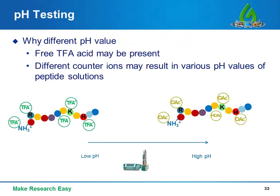Another helpful test is pH testing. For the same custom peptide, different counter ions can lead to different pH values in peptide solution. For custom peptides containing TFA, a lower pH results from free TFA acid, and since TFA is a much stronger acid than acetic acid, the pH of a TFA salt peptide is lower than that with acetate salt according to Lewis acid-base theory. If your experiment is very sensitive to the pH value of the final peptide solution, this test provides you with the final pH value of the custom peptide solution when dissolved in water.